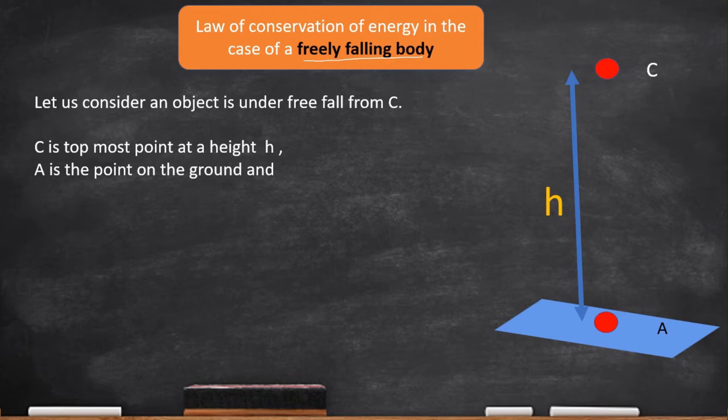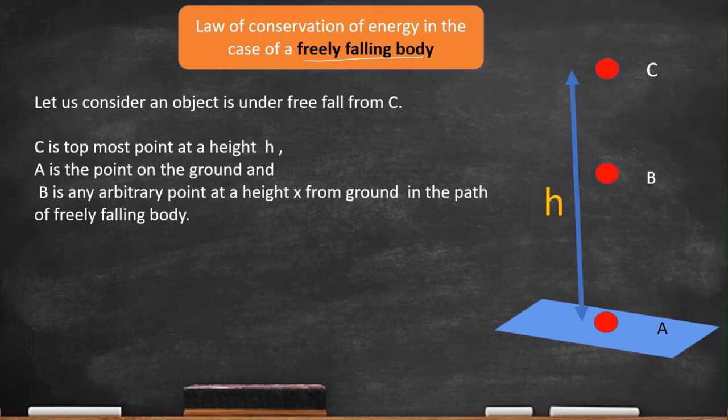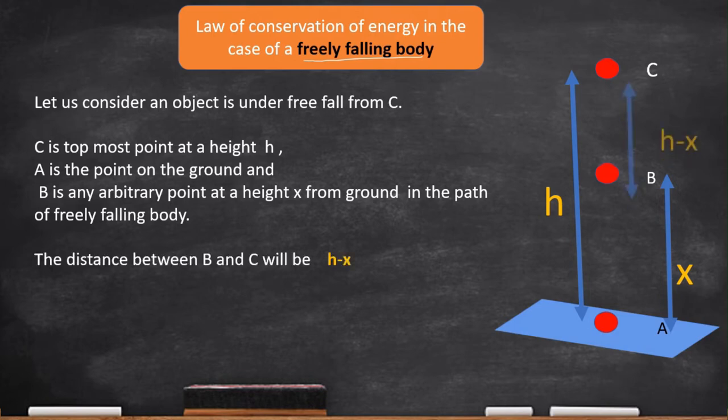In addition to these two points, we have to take one arbitrary point B, which is existing in between C and A. This point B is X units away from the ground. Then, automatically we can calculate the distance from C to B is H-X.